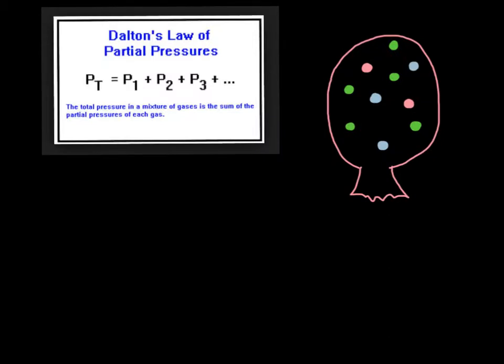Let's say I have a balloon here, and I have these three different gases: a pink gas, a blue gas, and a green gas. The total pressure in the balloon equals the pressure of one gas plus the partial pressure of the second gas plus the partial pressure of the third gas. The partial pressure is the pressure the gas would exert if it were the only thing there, and it depends on the amount of gas primarily, the temperature, and the volume of the container.